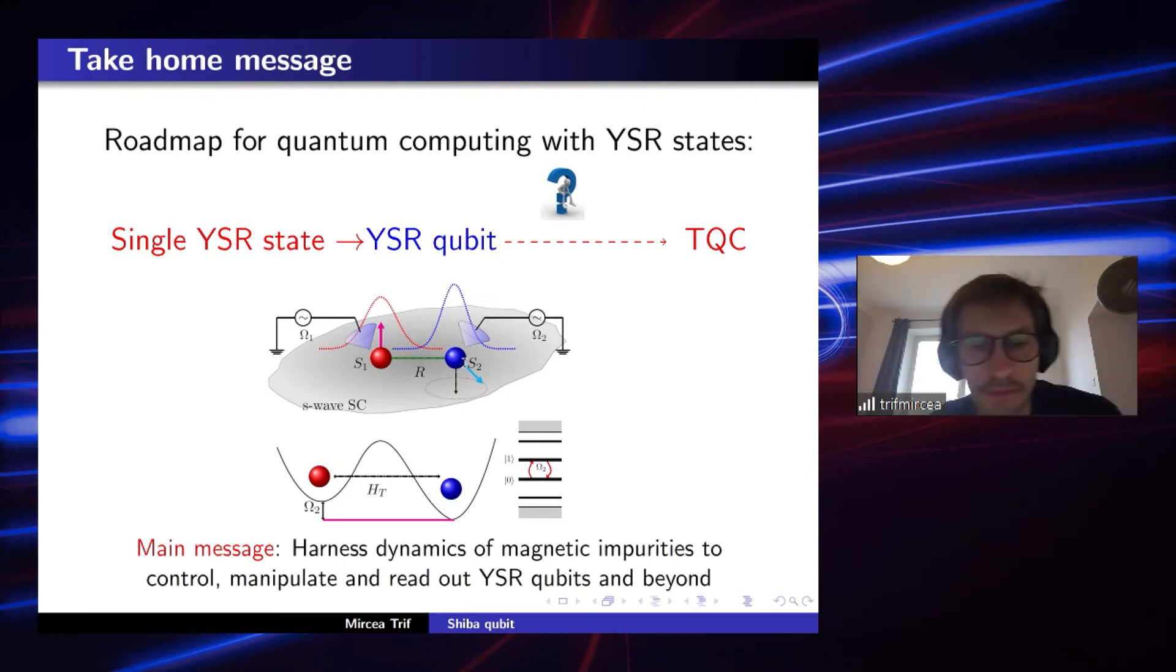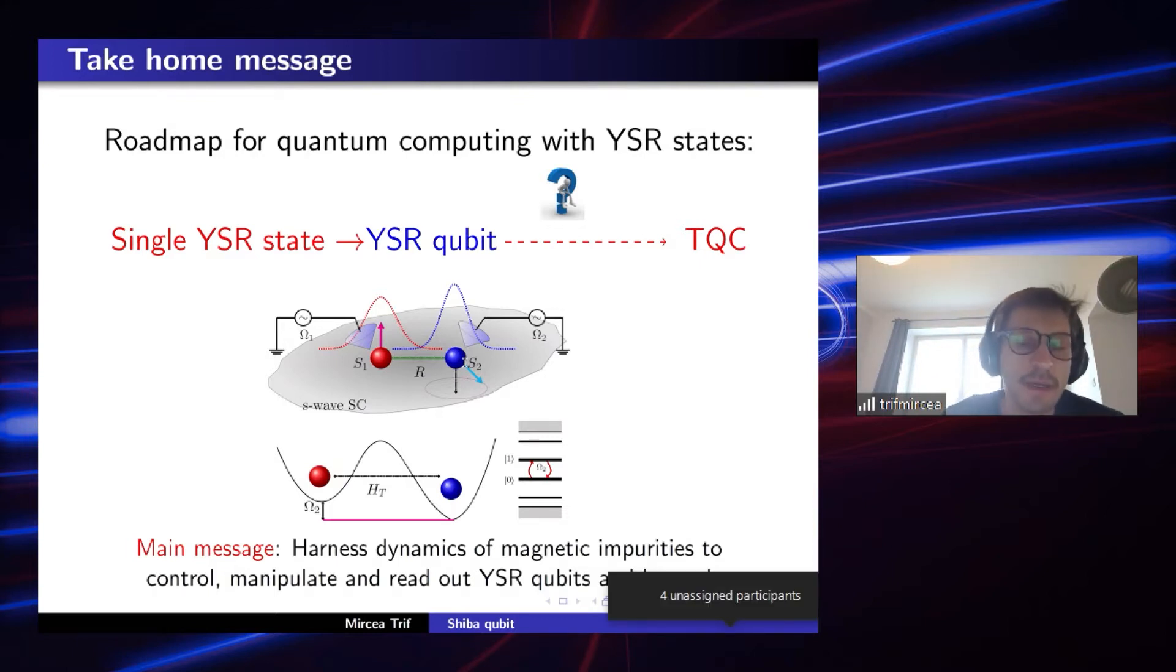would be that before reaching this kind of topological quantum computer, this exotic quantum processor, it might be useful to implement first some kind of conventional qubit that here we label the YSR qubit, that is formed by a dimer, namely two impurities in a conventional superconductor that interact and are manipulated.